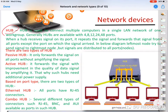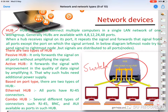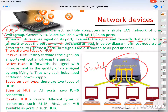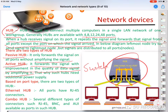Another device is the hub or switch. These are related — a switch is also called a smart hub. A hub is used to connect multiple computers in a single network. Hubs generally come in 4, 8, 24, or 48 port configurations. When a signal is received on a port, the hub repeats and forwards the signal from all ports except the port on which the signal arrived. There are two types: passive hub, which only forwards a signal, and active hub, which amplifies and improves signal quality.